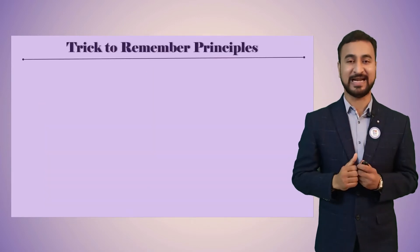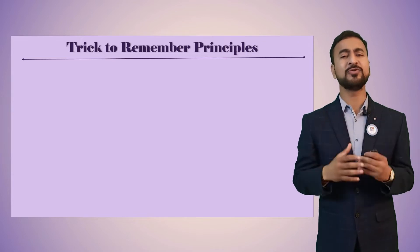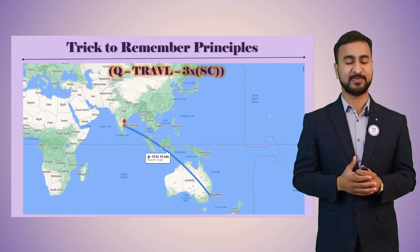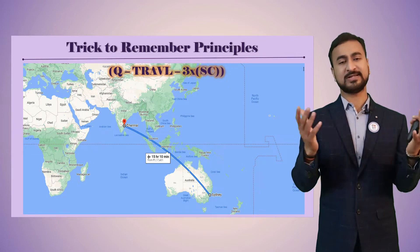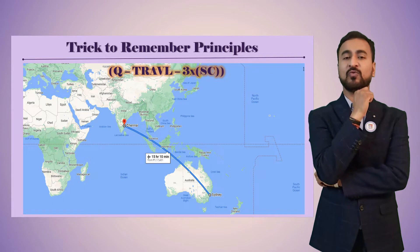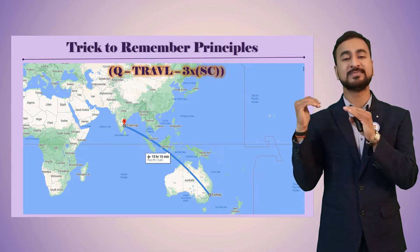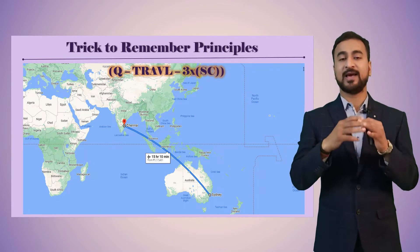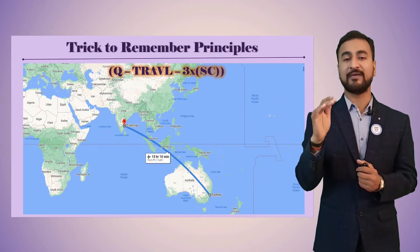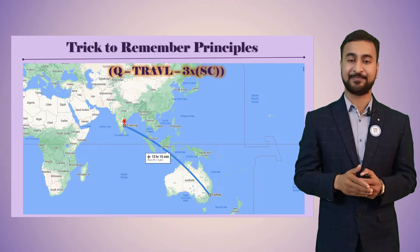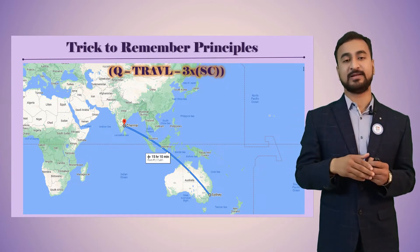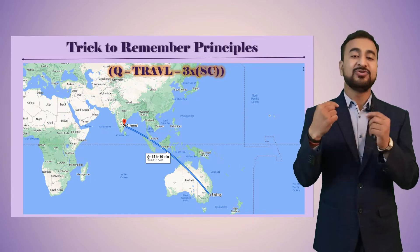So what is the technique? I want to tell you one story that will help you recall and remember these principles. The story is very simple — it is the story of Mr. Q, who wants to travel from Sydney to Chennai. The formula is: Q travel test 3 cross essay — this is the acronym for all 12 principles.